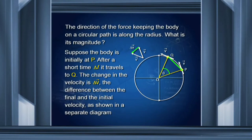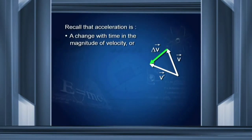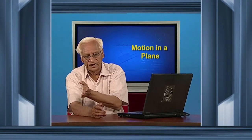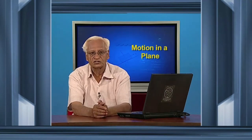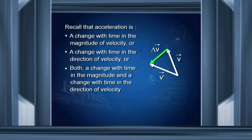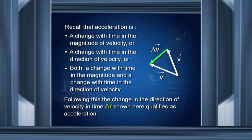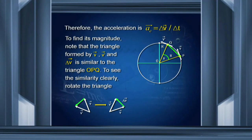From the final position minus the initial position, that is the change in velocity Δv. Acceleration is a change with time in the magnitude or direction of velocity — which we have in this case. We have the velocity in one direction, then in another direction, and the change in velocity is Δv. Therefore Δv gives us acceleration. The magnitude of the acceleration is Δv divided by the time taken Δt.